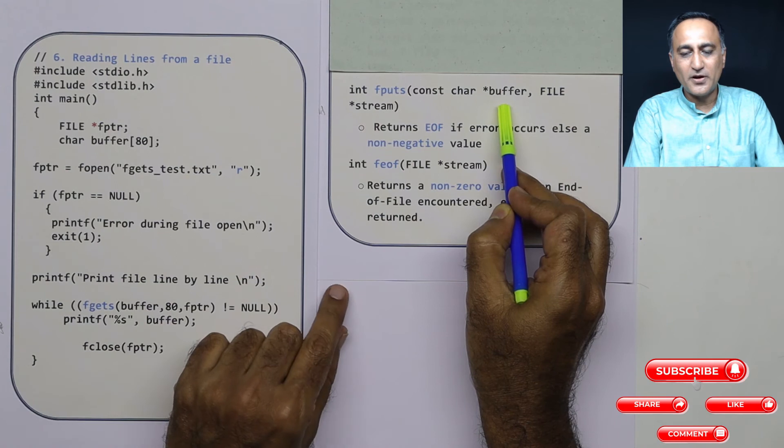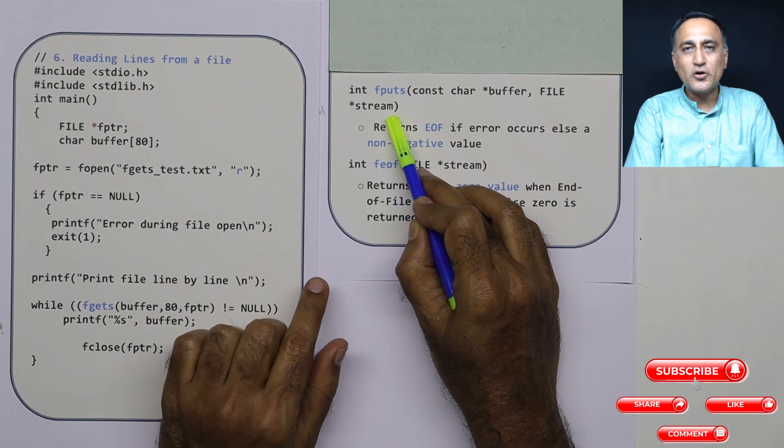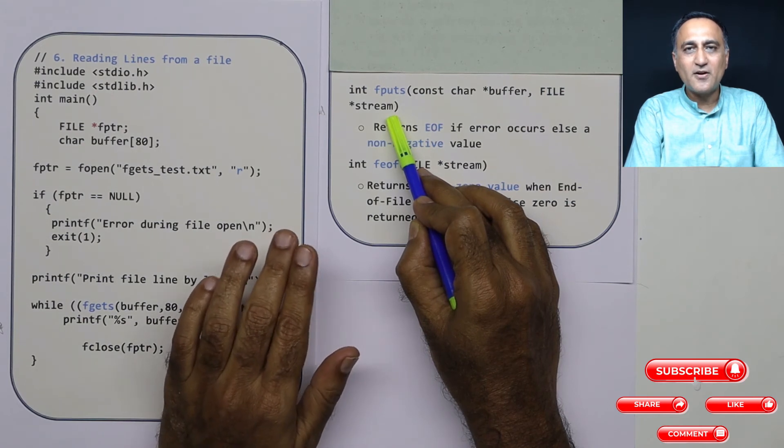Then the other parameter just happens to be your output. Output can be your monitor or it can be another file.